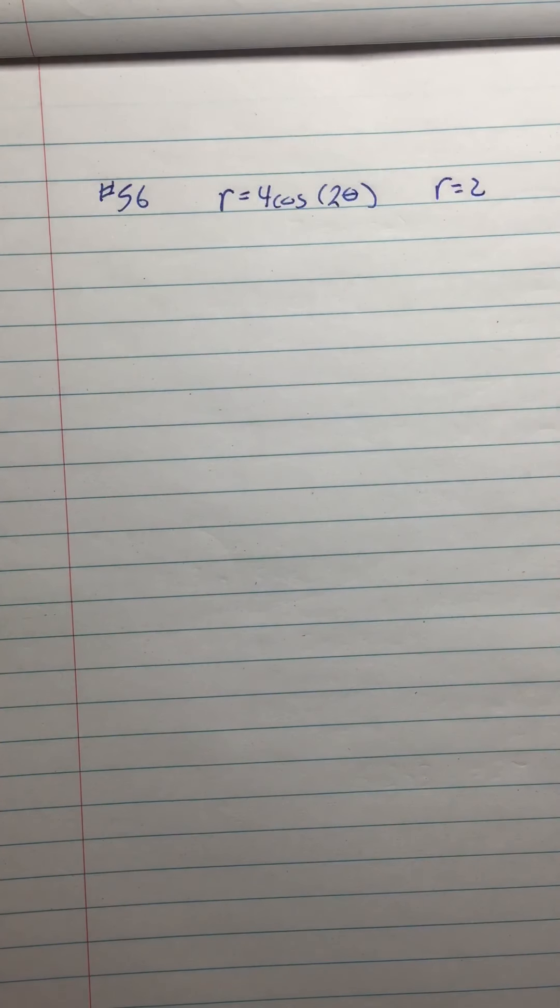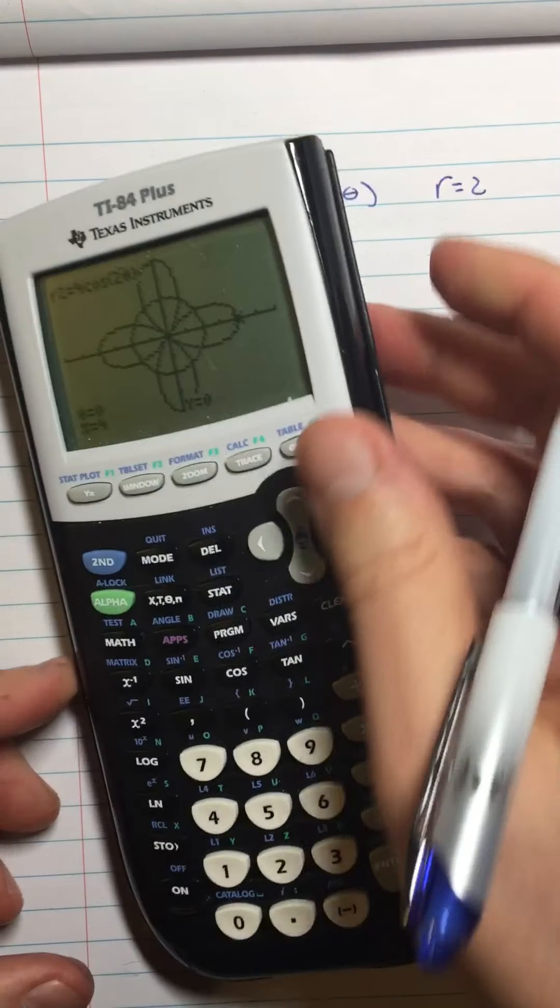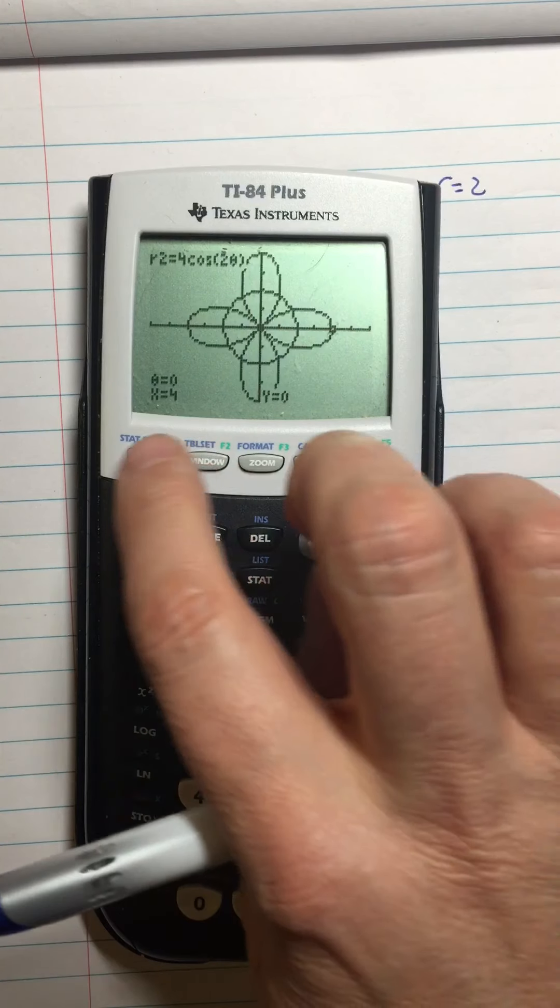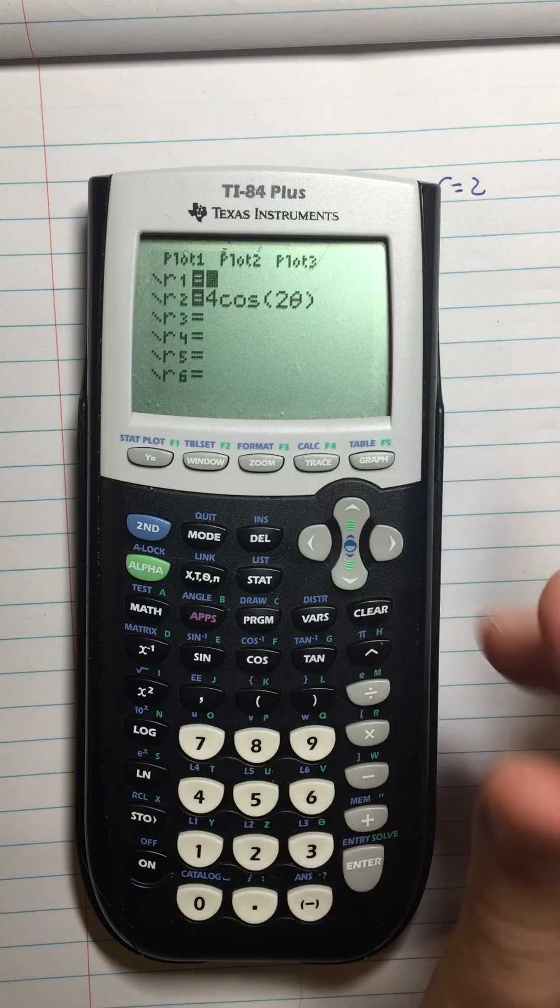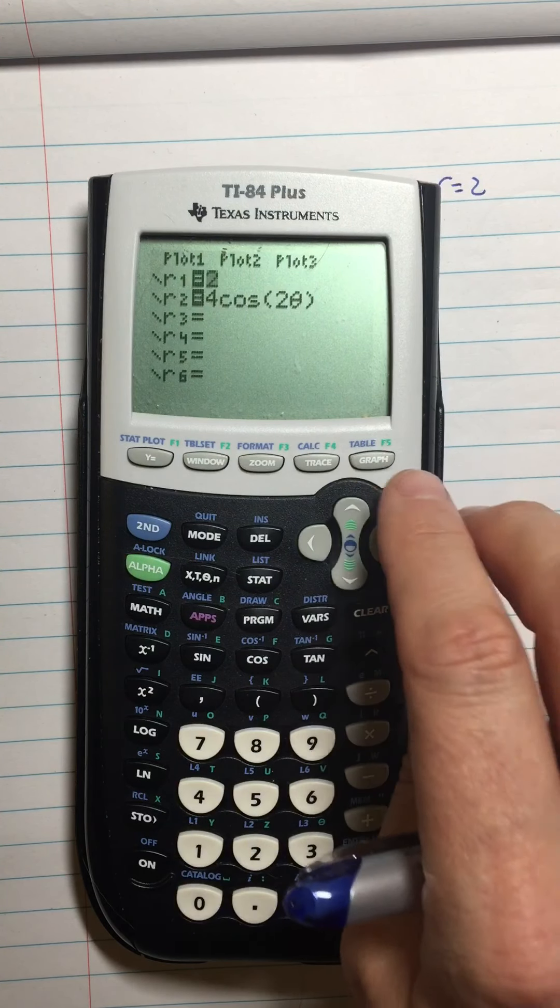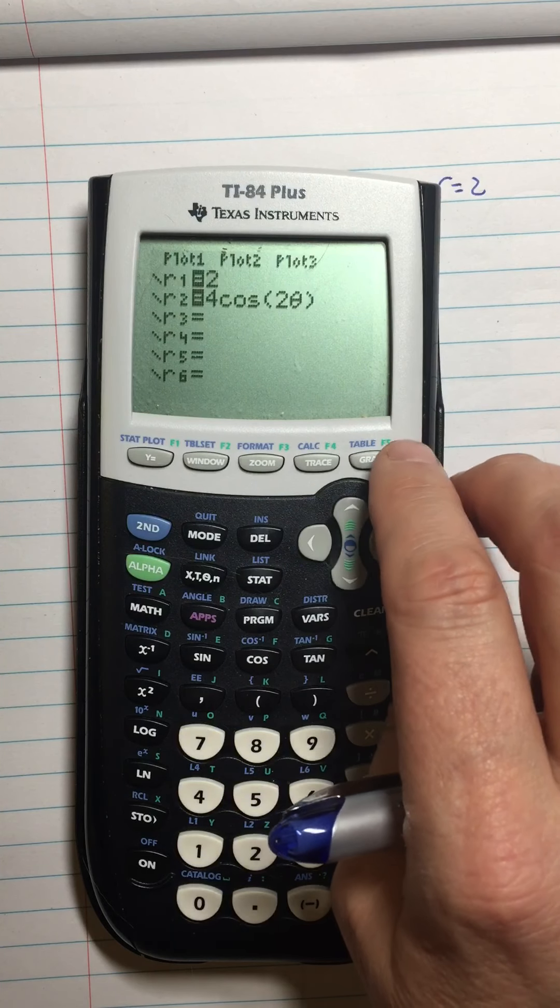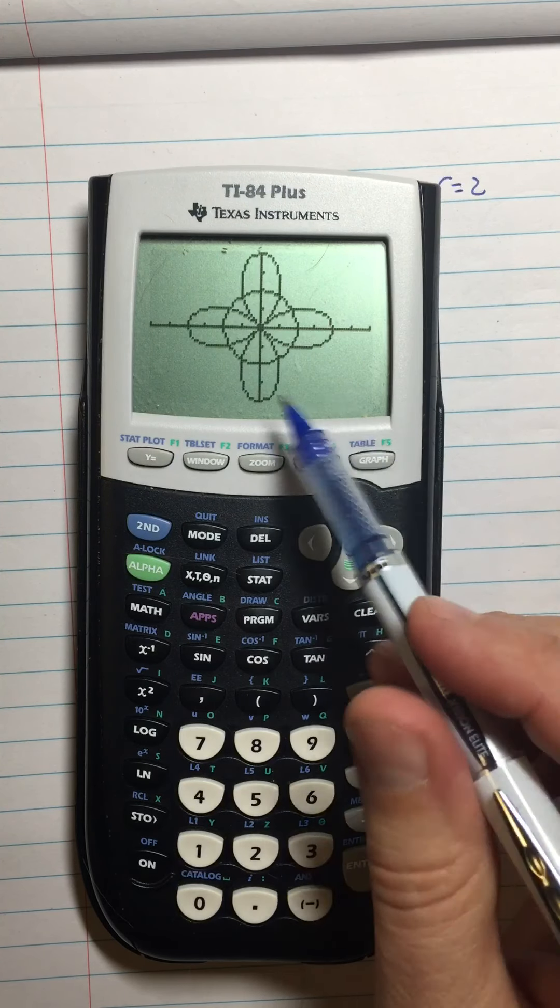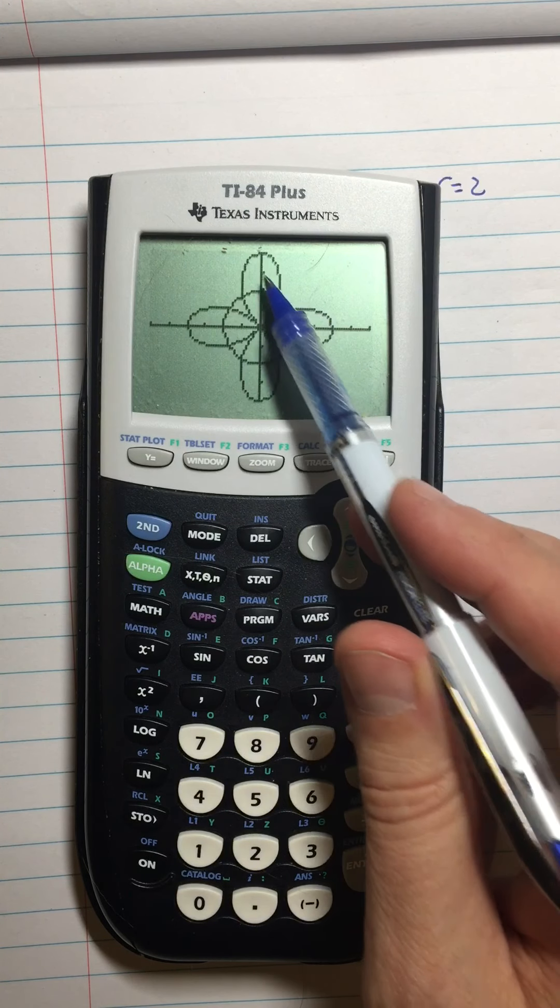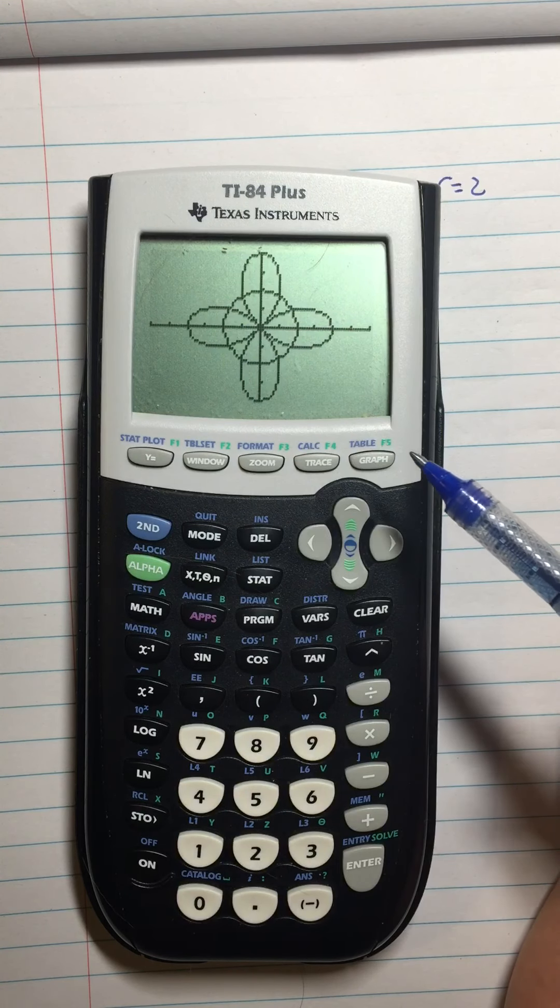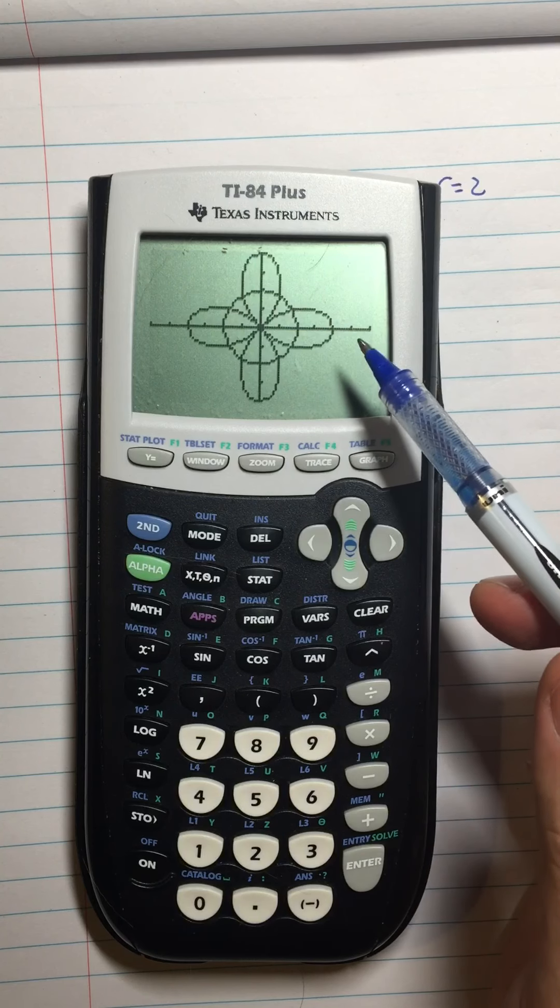Our functions are r equals 4 cosine 2 theta and r equals 2. I think I graphed these up already. Here's r equals 2, the circle, and r equals 4 cosine 2 theta, the rose. I want the area outside the circle but inside the petal, so each of these parts.